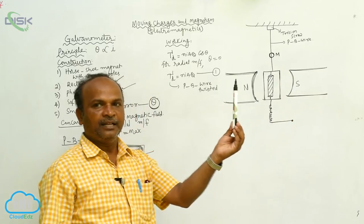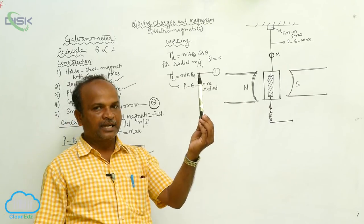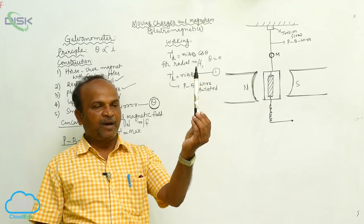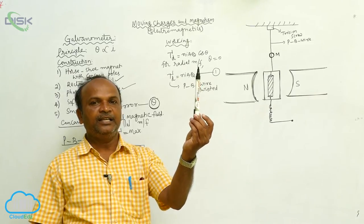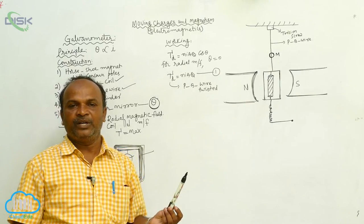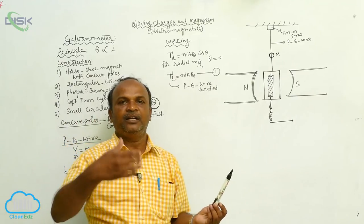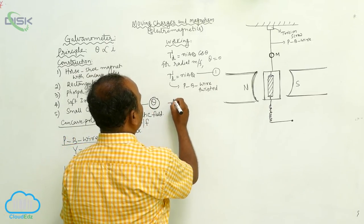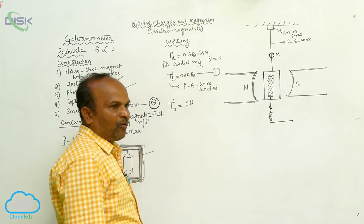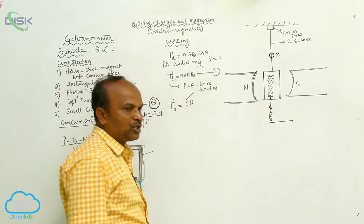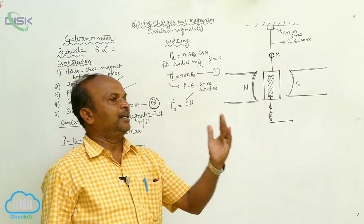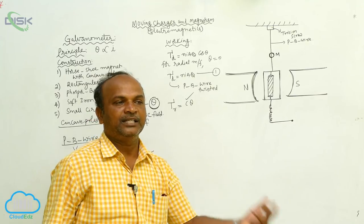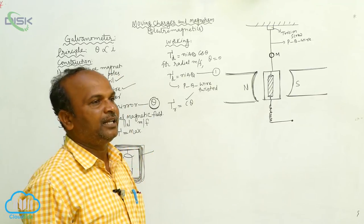Because of the restoring torque, the wire tries to regain its original shape. The restoring torque is equal to C into θ, where C is the couple per unit twist. For 1 degree deflection, restoring torque is C; for 2 degrees it is 2C; for 3 degrees it is 3C; and for θ degrees, the restoring torque is C·θ. This is the second equation. C depends upon the nature of the phosphor bronze wire.